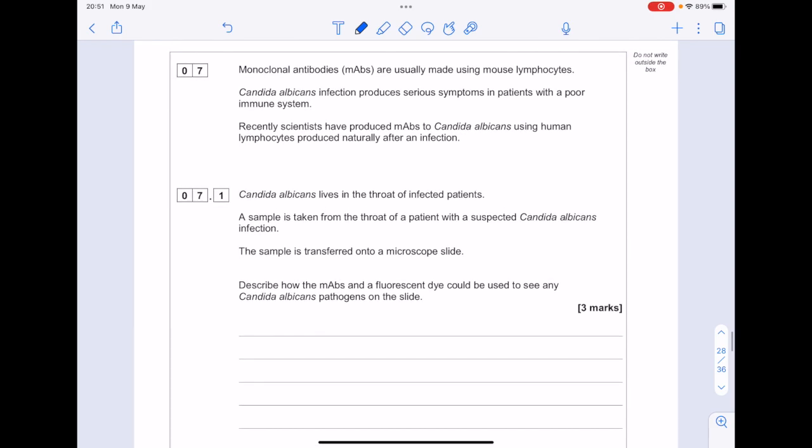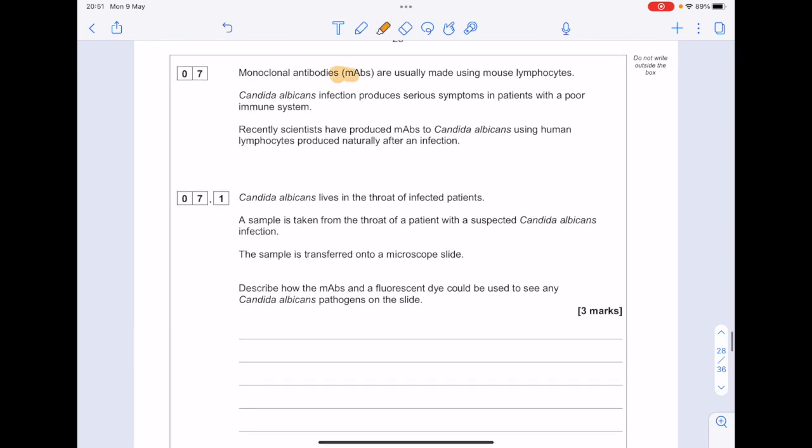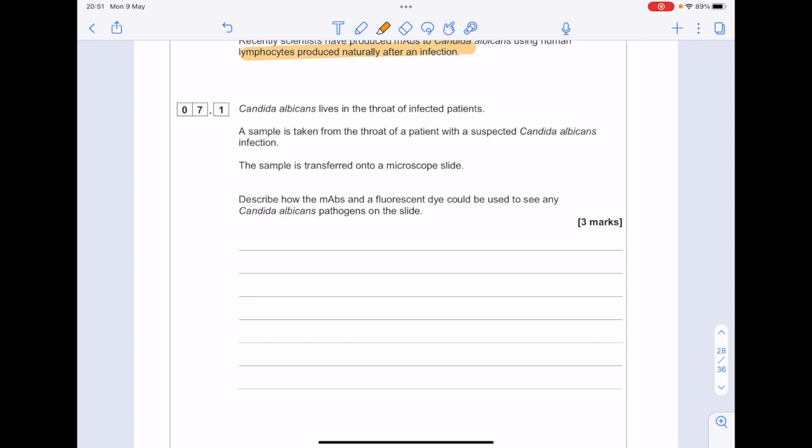Monoclonal antibodies are usually made using mouse lymphocytes. Candida albicans infection, which is actually known as thrush, produces serious symptoms in patients with a poor immune system. Recently scientists have produced monoclonal antibodies to Candida albicans using human lymphocytes. The sample is transferred onto a microscope slide. Describe how the monoclonal antibodies in the fluorescent dye could be used to see any Candida albicans pathogens on the slide.